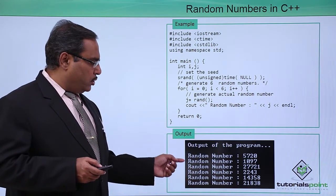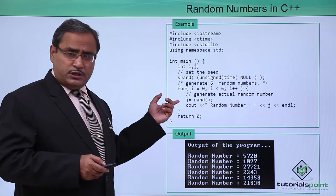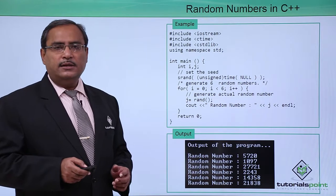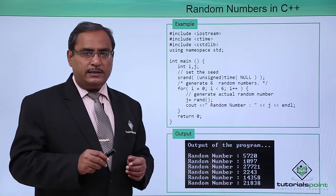If I execute this code, this is the output whatever we have observed. If you type this code and if you go for the execution, obviously this number sequence will be different because they are totally generated in a random sequence.